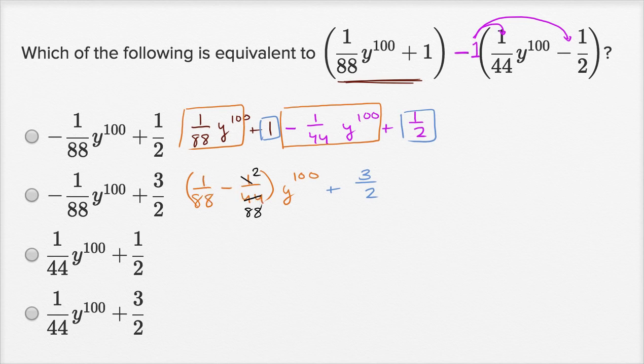Well, this is going to give us negative 1 88th. 1 88th minus 2 88ths is going to be negative 1 88th y to the 100th, y to the 100th plus 3 halves. And that is negative 1 88th y to the 100th plus 3 halves. This choice right over here.